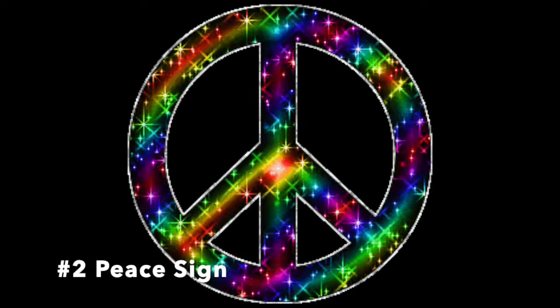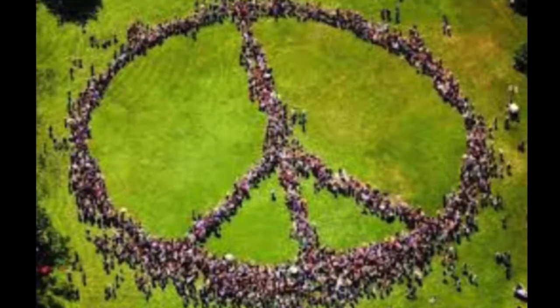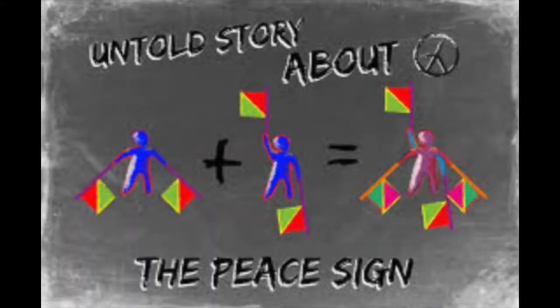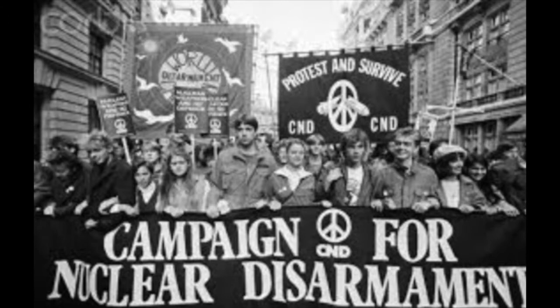Symbol number two: the peace sign. Today, it is one of the most powerful and inspiring symbols on the planet. Originally, it was an image of two superimposed flag semaphore letters, N and D, meant to stand for nuclear disarmament, created by Gerald Holtham in 1958 to be used at a protest against nuclear weapons. It has also been interpreted as a depressed and defeated stick man stretching his arms out and downward in desperation and defeat.